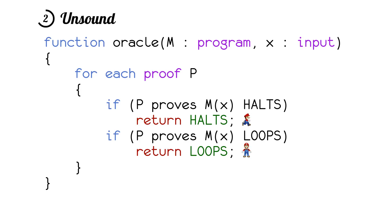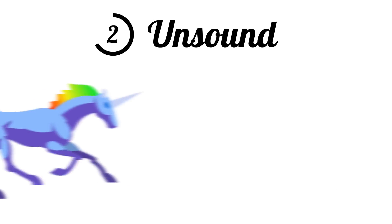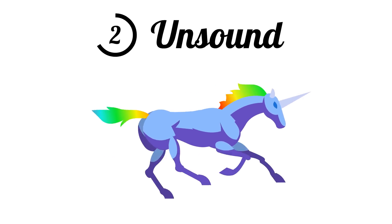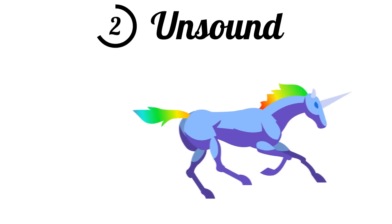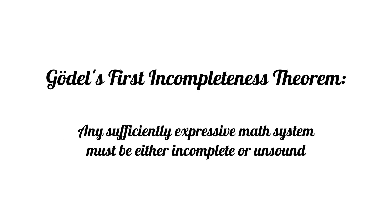I want to reiterate that a result like this would be devastating for the math system, since unsoundness would completely delegitimize the math system as explained in the previous video. So, because the halting problem is unsolvable, math itself must be either incomplete or unsound, which is Gödel's first incompleteness theorem.